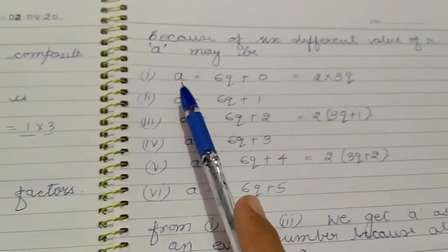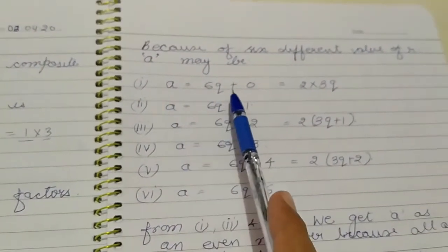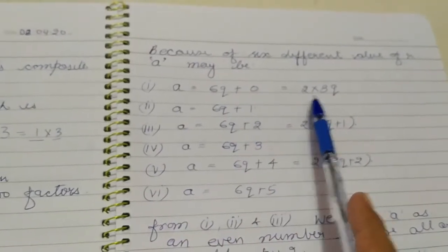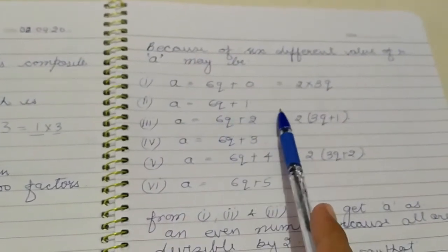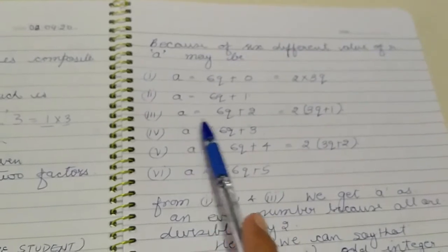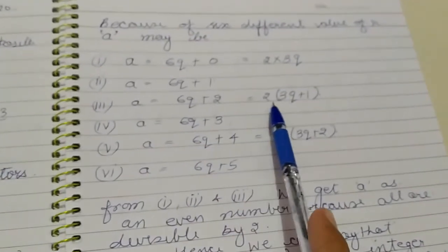Because of 6 different values of r, we obtain a as a equals to 6q which is a multiple of 2. a equals to 6q plus 1 which is not a multiple of 2. Similarly a equals to 6q plus 2 again a multiple of 2.